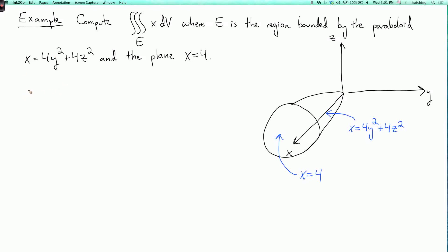So this is the integral as x goes from 0 to 4, and then I sort of don't really care which order we do the yz integral, so I'm going to write the inner part as a double integral over the region where y squared plus z squared is less than or equal to x over 4 of x dA dx.